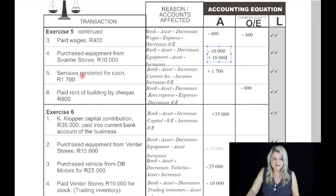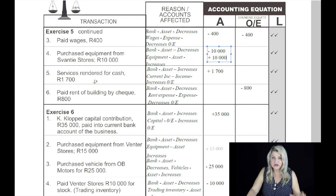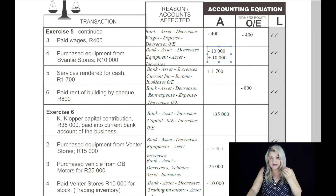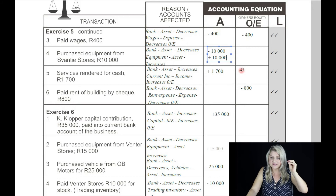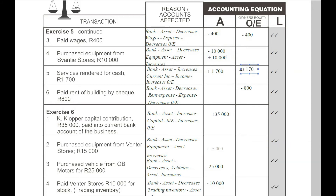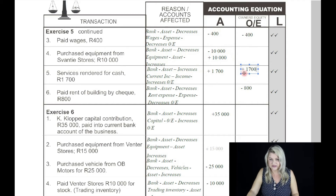Cash services rendered for cash on the fifth, 1,700 Rand. The two accounts are bank, which is an asset and will increase. The other account is current income, which is an income, and that account affects the owner's equity positively because it's money coming into the business — 1,700 Rand.